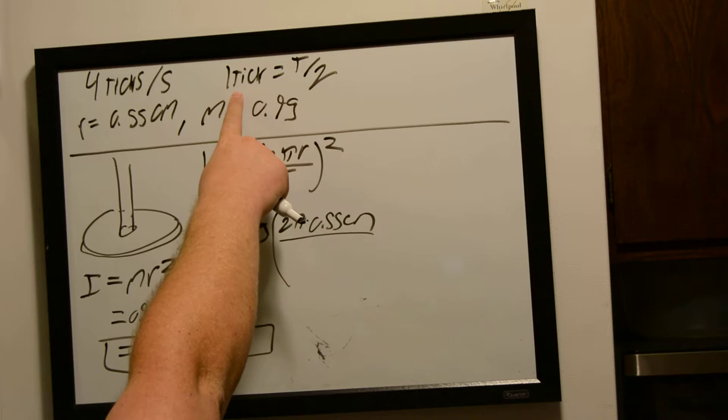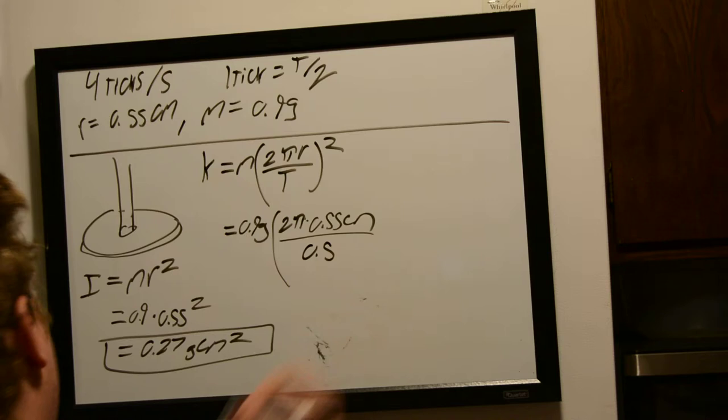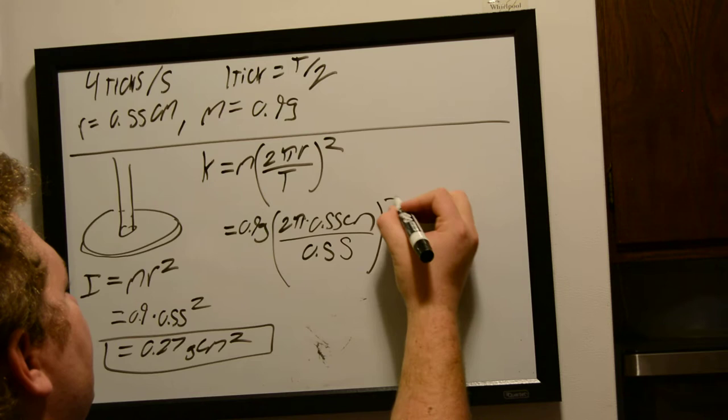from the givens up here, that one tick is half of a period. So, 0.5 seconds squared. So, now,